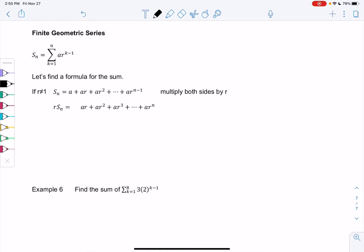Section 10-2, Finite Geometric Series. We're going to take that geometric sequence, a_n equals a times r to the n minus 1, and convert it to a series by finding the sum of these terms.